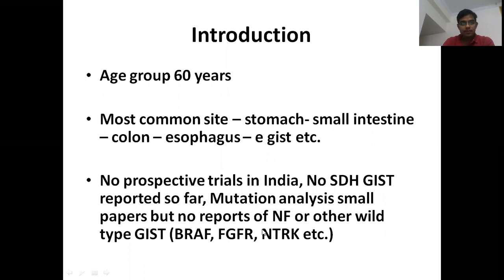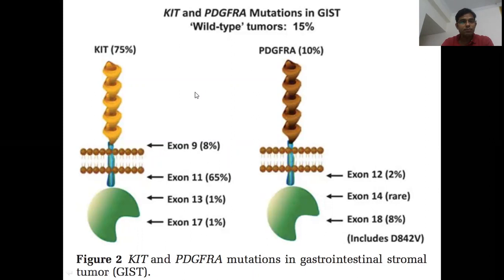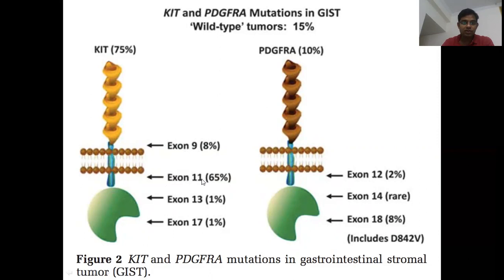GIST is driven by activating mutations of KIT and PDGFRA — platelet-derived growth factor receptor alpha. These are receptor tyrosine kinases with various domains: extracellular domain, juxtamembrane domain, ATP-binding domain, tyrosine kinase domain, and activation loop domain. The most common mutation in CKIT is exon-11. The most common in PDGFRA is exon-18. These are the various mutations that happen across these domains.